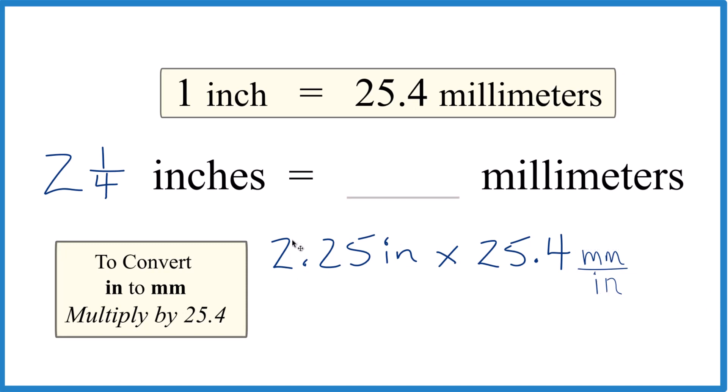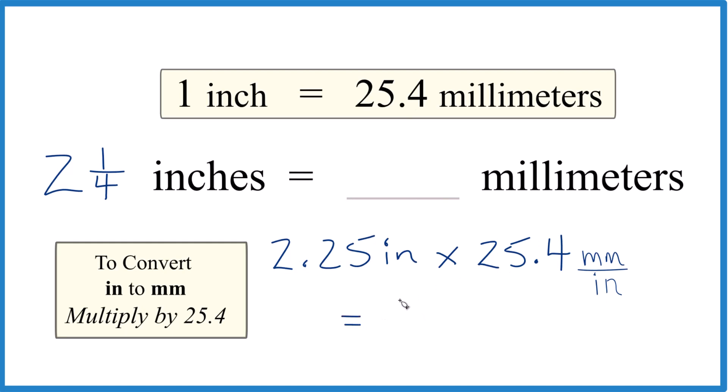Now we multiply 2.25 times 25.4. We end up with 57.15, let's call it 57.2. Inches are on the top here and on the bottom, so we cancel them out. We're left with millimeters, which is what we're looking for.